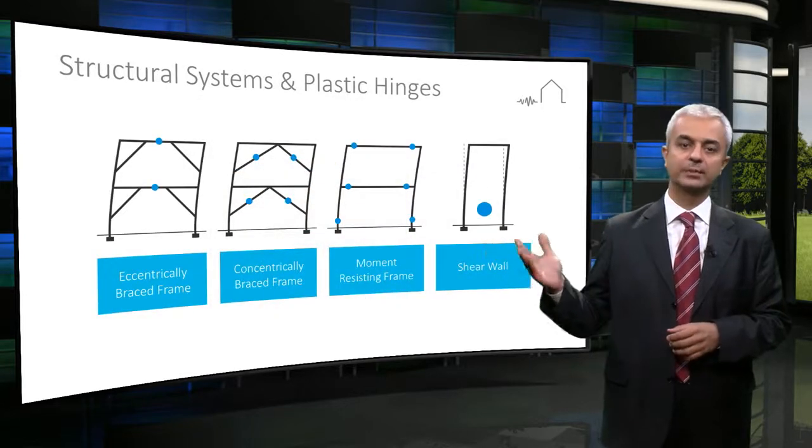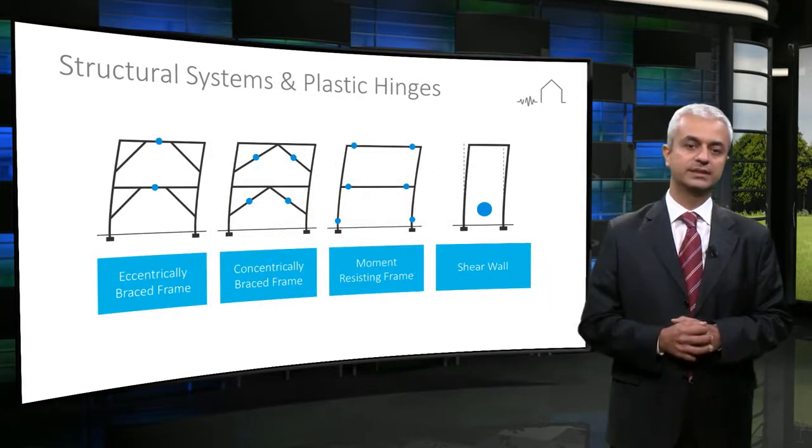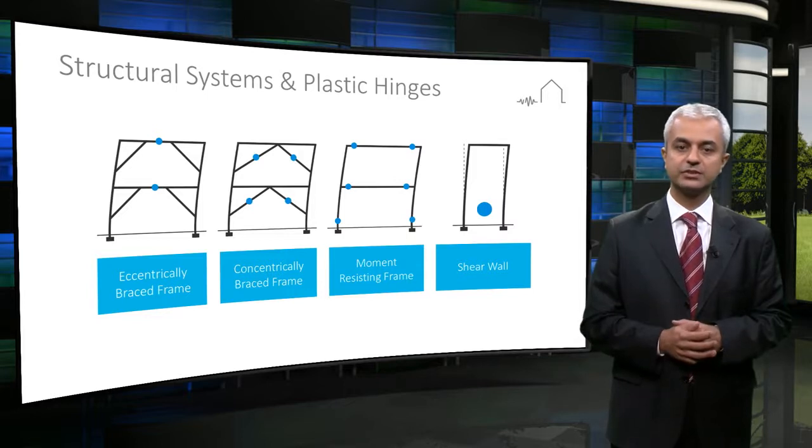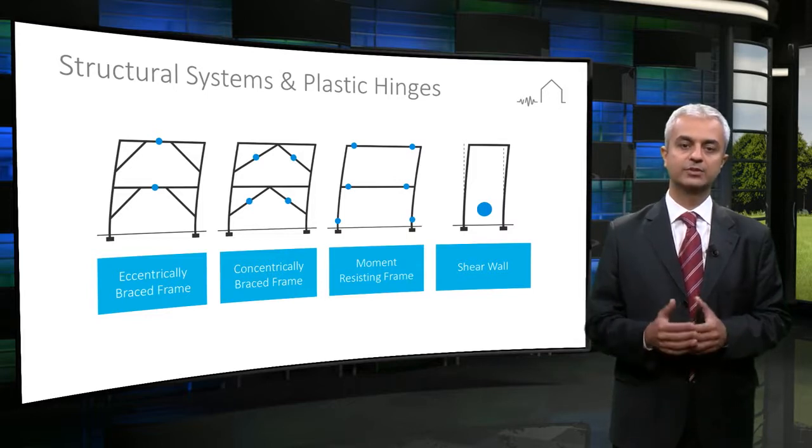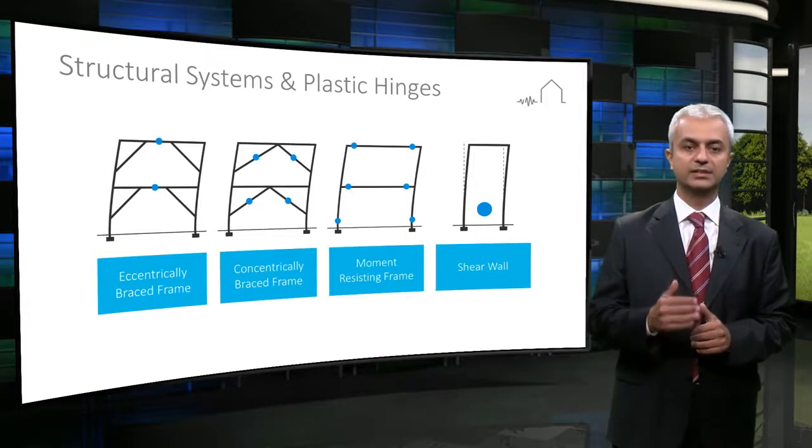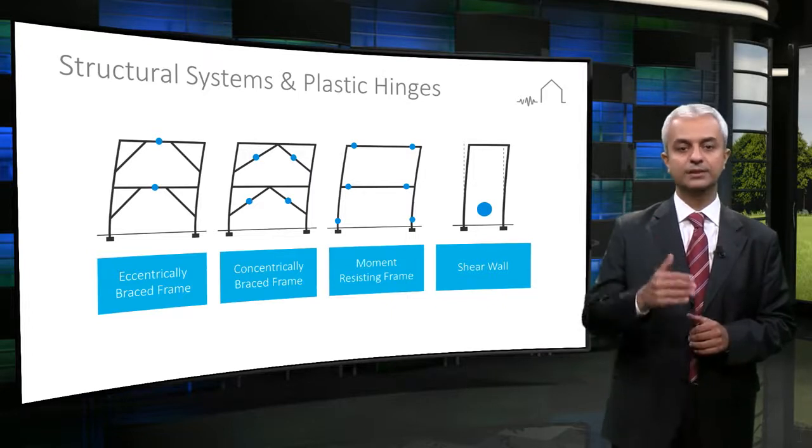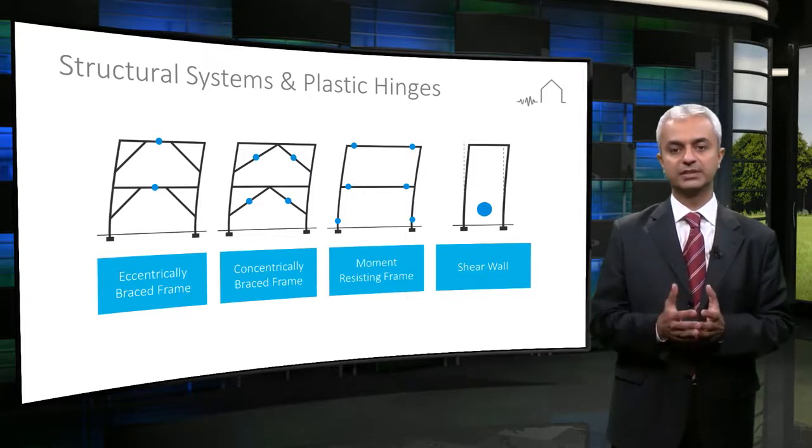This graph shows some examples of lateral load-resisting systems. The blue dots indicate the potential plastic hinge locations. When the number of plastic hinges increases, the ability to accommodate inelastic deformations increases.